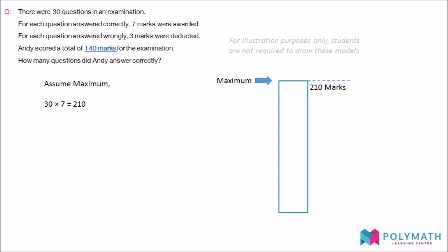Thus, we take the difference between the maximum of 210 marks and Andy's 140 marks, and we obtain the difference of 70 marks. Our assumption is 70 more than the actual marks that Andy scored.